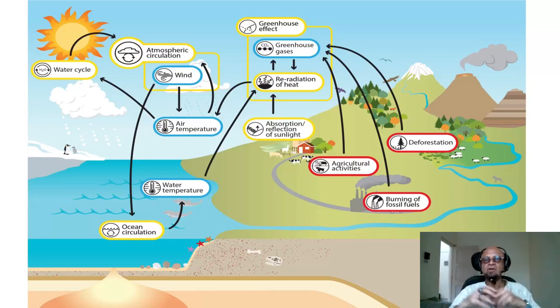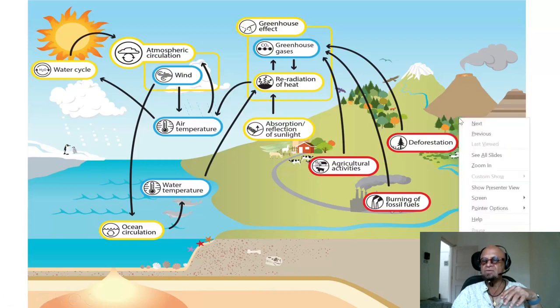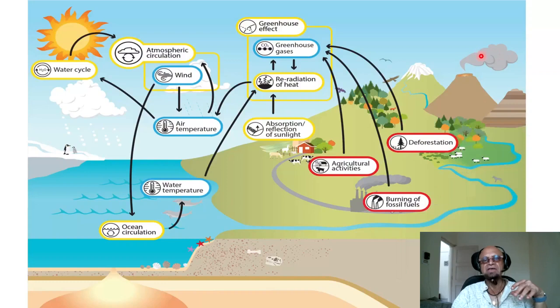Volcanoes are changing the energy balance by emitting - oops, let's bring up the laser pointer - emitting chemicals, ash, dust which can block sunlight, change albedo, absorb energy, reflect energy and so on. So they are changing the energy balance, so they are a forcing as well.